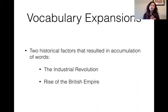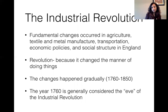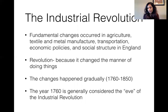The first reason is the Industrial Revolution — the biggest change — and the second is the rise of the British Empire as a colonial superpower. The Industrial Revolution started in England and changed the social structure and economy of England. It's called a revolution because it changed the way things were done, and although it happened over about 100 years, the year 1760 is generally considered the eve of the Industrial Revolution, or the year it started.